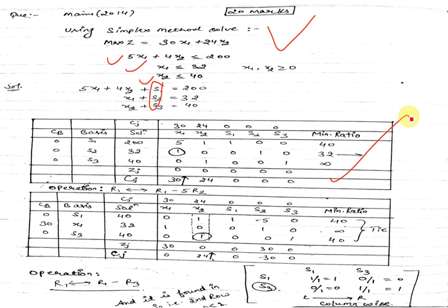I am sure you can make it if you have seen my previous lecture. Then after doing that, after operating this operation, R1 changes to R1 minus 5·R1.